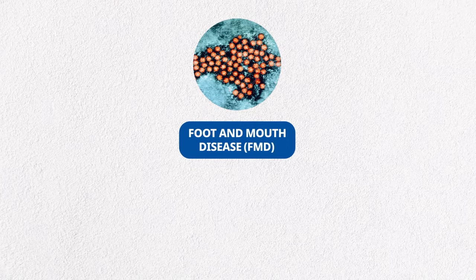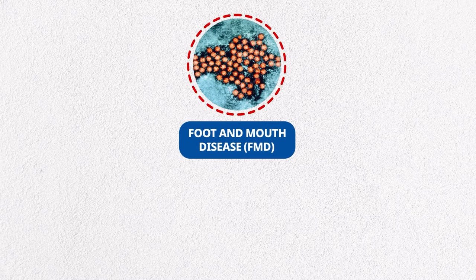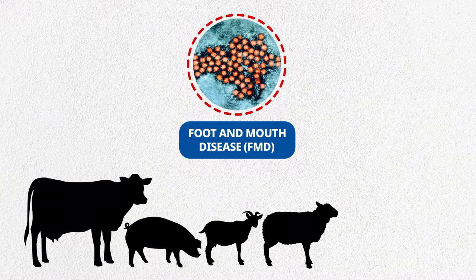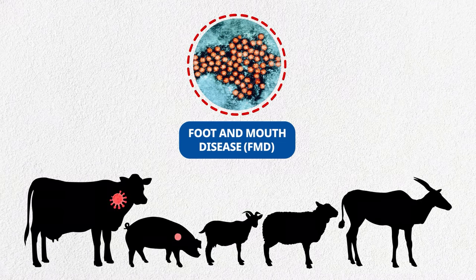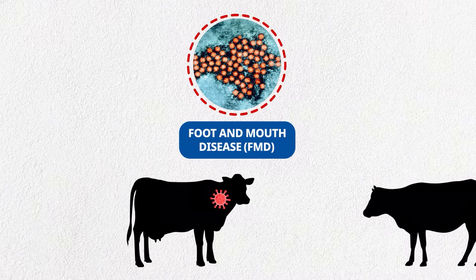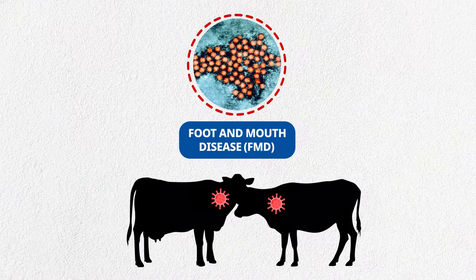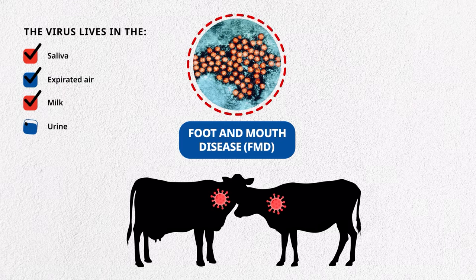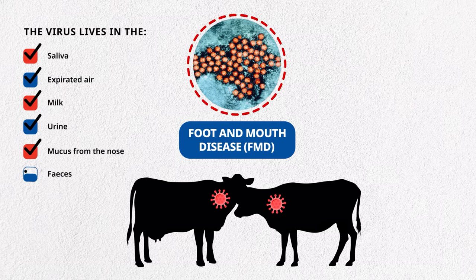Foot and mouth disease, or FMD, is a highly contagious viral disease of cloven-hoofed animals such as cattle, pigs, goats, sheep, and some species of game. Even though this disease can infect many animals, there is a low mortality rate. FMD is spread through direct contact from the infected animal to the non-infected animal. The virus lives in the saliva, expired air, milk, urine, mucus from the nose, feces, and eye discharges from the infected animal. Indirect infection happens through animal tissues, secretions, and discharges, or other objects, humans, or birds. Humans can spread the virus via their clothes, shoes, and mucous membranes.